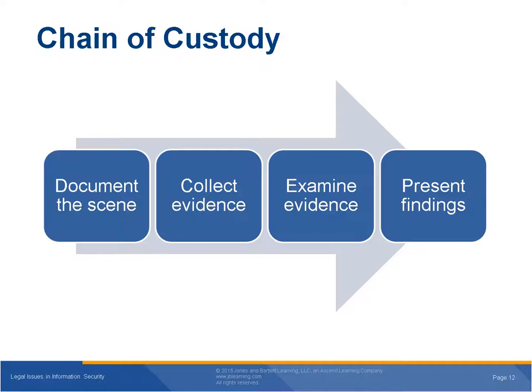Chain of custody is an important evidence concept. Courts and attorneys use a chain of custody document to help prove that evidence is admissible. It shows who obtained evidence, where and when it was obtained, who secured it, and who had control or possession of it. It is used to prove that evidence is reliable — evidence is reliable when it is not destroyed, changed, or altered and cannot be modified after it is originally collected.